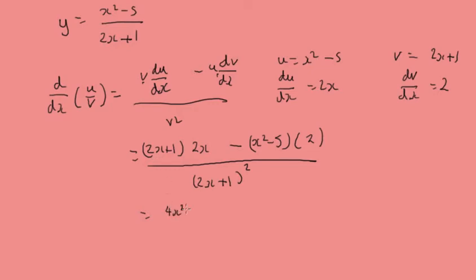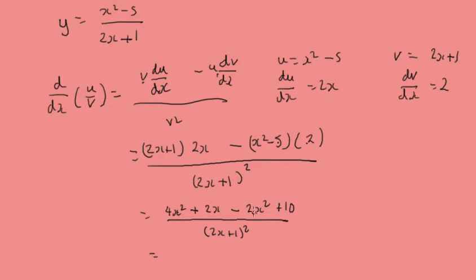Expanding and tidying up, that gives us 4x squared plus 2x minus 2x squared minus 10, all over 2x plus 1 squared. Simplifying: 2x squared plus 2x plus 10, and taking a 2 out gives us 2 times the quantity x squared plus x plus 5, all over 2x plus 1 squared.